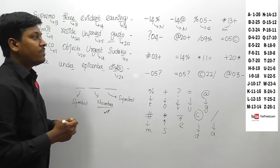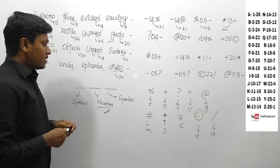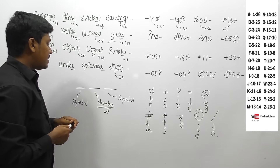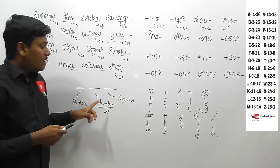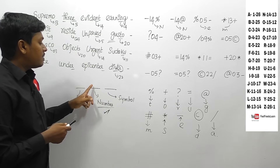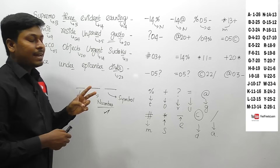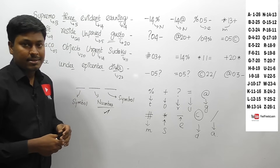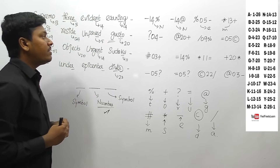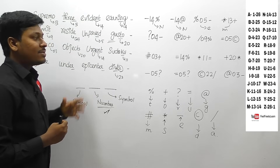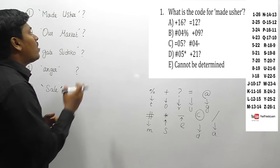We have now found the full pattern: symbols are used for the first and last letter of each word, and numbers in alphabetical order represent the second letter from the last. Let's move on to all five questions based on this pattern.